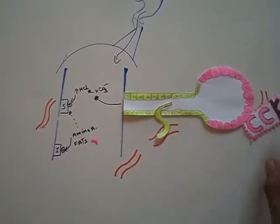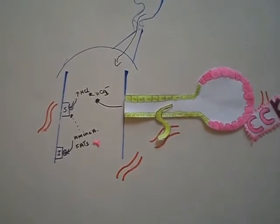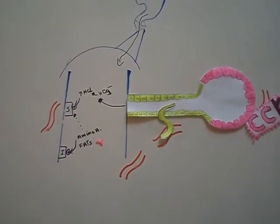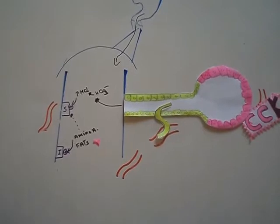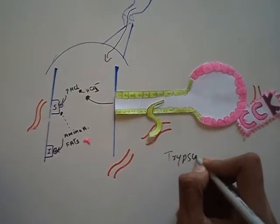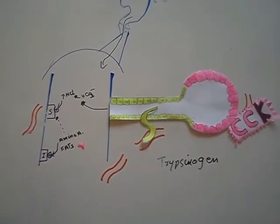So CCK will affect the acinus to produce these enzymes. These enzymes include trypsinogen and chemotrypsinogen.